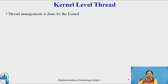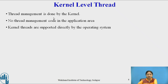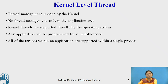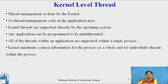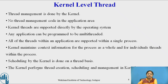Now let us see kernel level threads. Here the thread management is done by the kernel. No thread management code is present in the application area, which is user space. The kernel thread is not present in the application area — it is only present in the kernel area. Kernel threads are supported directly by the operating system. Any application can be programmed to be multi-threaded using kernel level threads. All threads within an application are supported within a single process. The kernel maintains context information for the process as a whole and for individual threads within the process. Scheduling of kernel threads is done by the kernel itself, and it is based on threads.